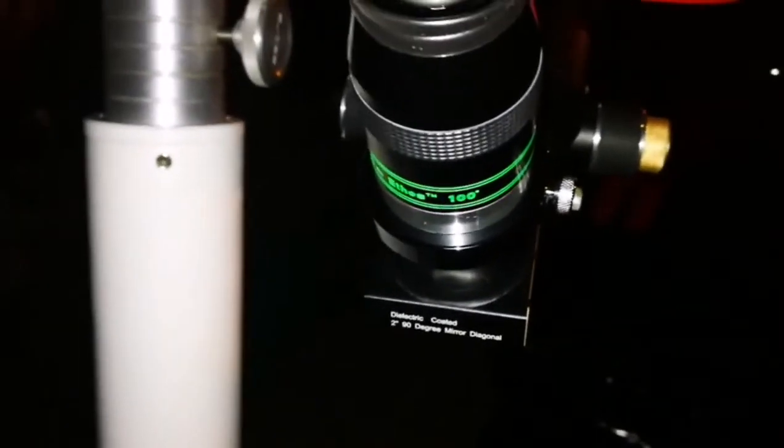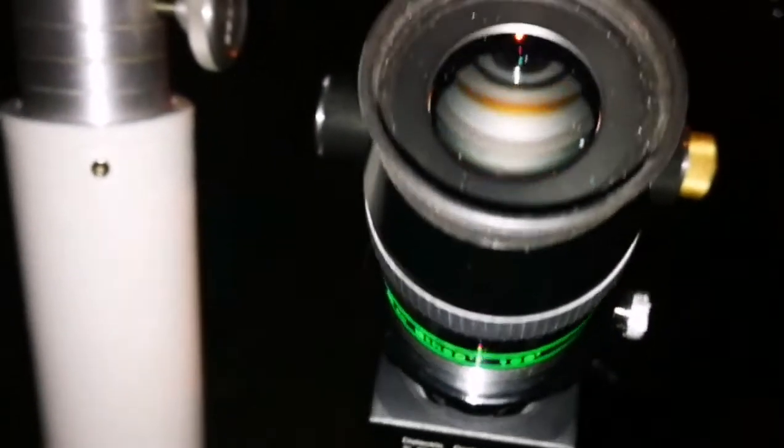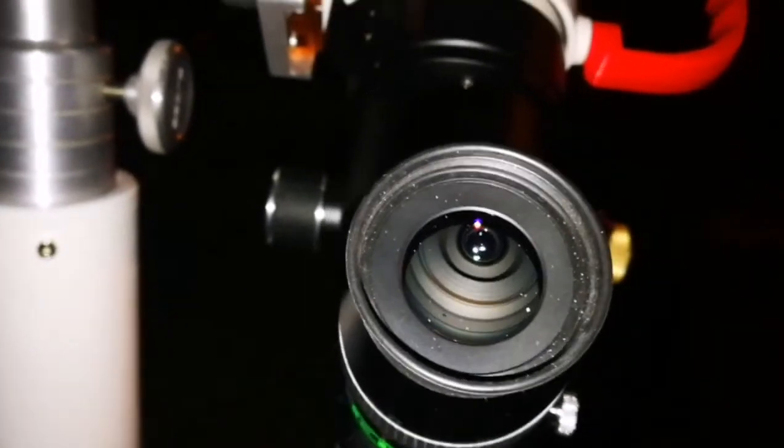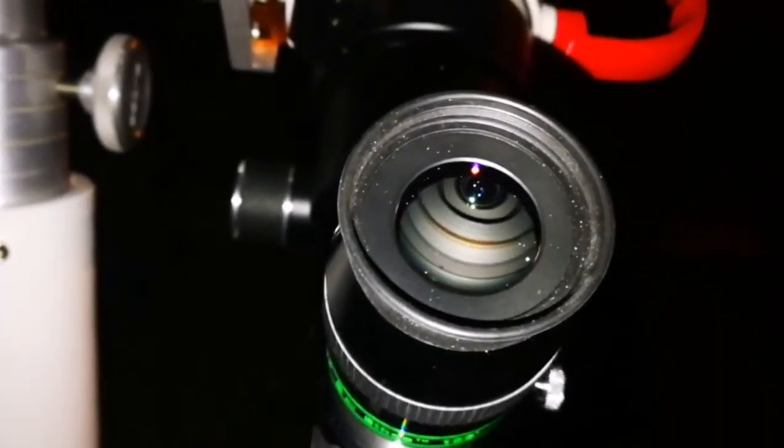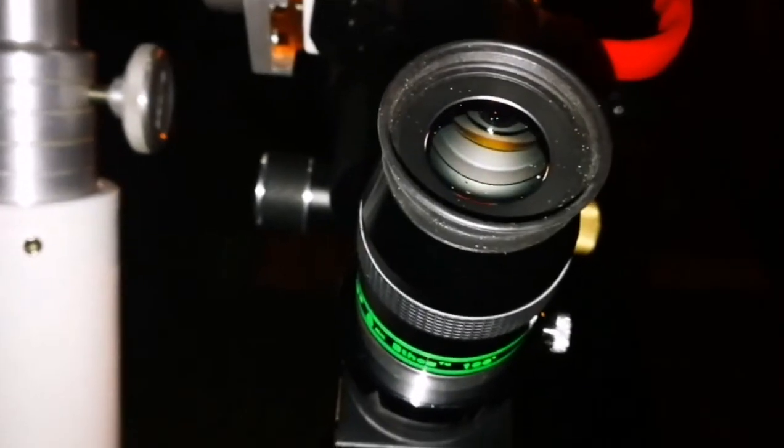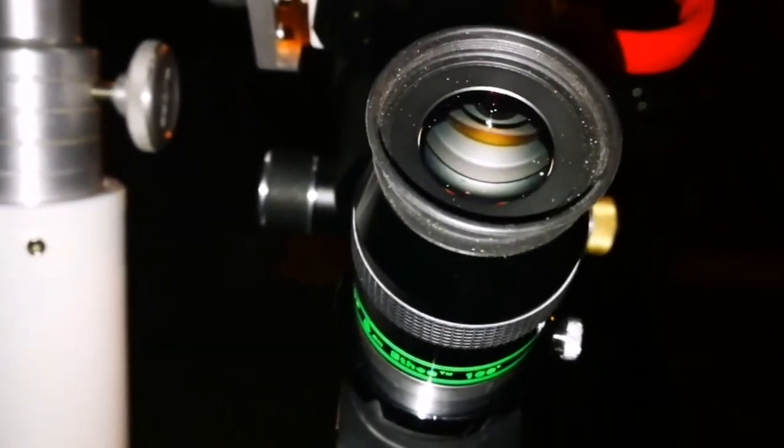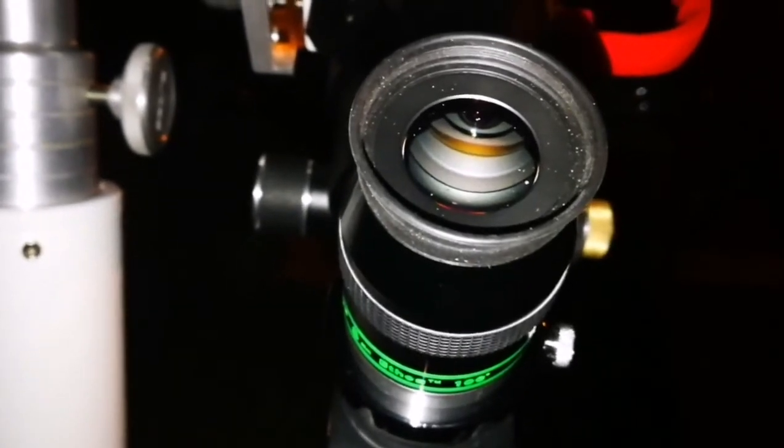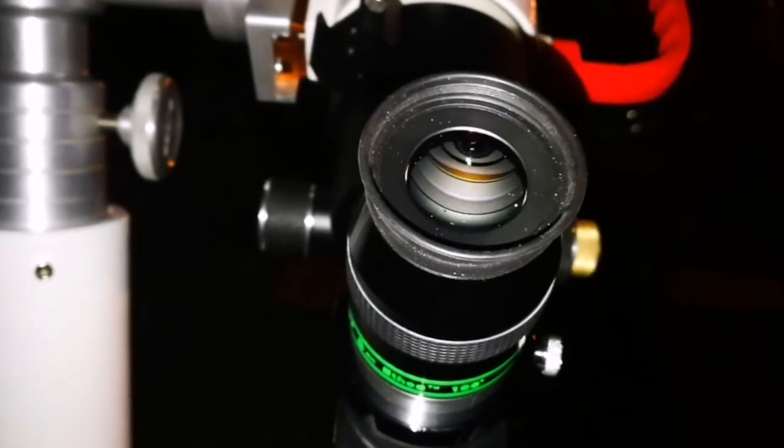Now I'm using the Teleview Ethos 8 millimeter 100 degrees. The clouds and this light pollution is not on my side, so I'm not seeing any individual stars, just a bright patch of the cluster looks bigger compared to the Nirvana 82 degrees.